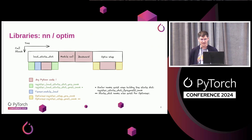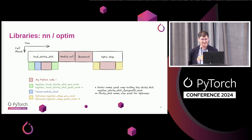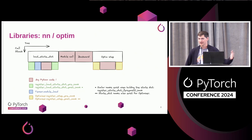Module call and backward — pretty much anything can happen; we're going to cover them in a second. And in the optimizer step, we also have step pre and post hooks. If you want to do processing just before or just after applying your optimizer step, you can register hooks into these places as well.